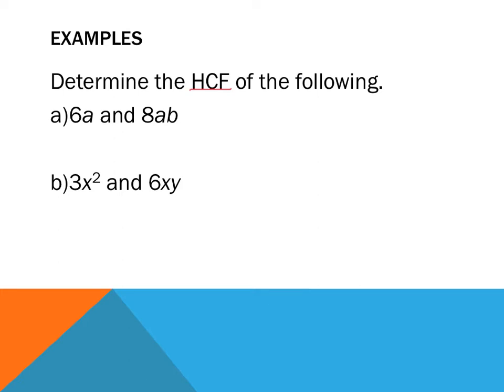It says determine the highest common factor of the following: 6a and 8ab. If you look at these two terms there's numbers and pronumerals. There is a factor that will go into the numbers and a common factor amongst the pronumerals. If we look at the numbers there's 6 and 8. One goes into them, two goes into them. Three goes into six but doesn't go into eight. So it's looking like when I count through my numbers that two is going to be my highest common factor for the numbers. But there's also another common factor when I look at the pronumerals. I've got a and ab. A common factor amongst a and ab is a. So the highest common factor of 6a and 8ab is 2a.